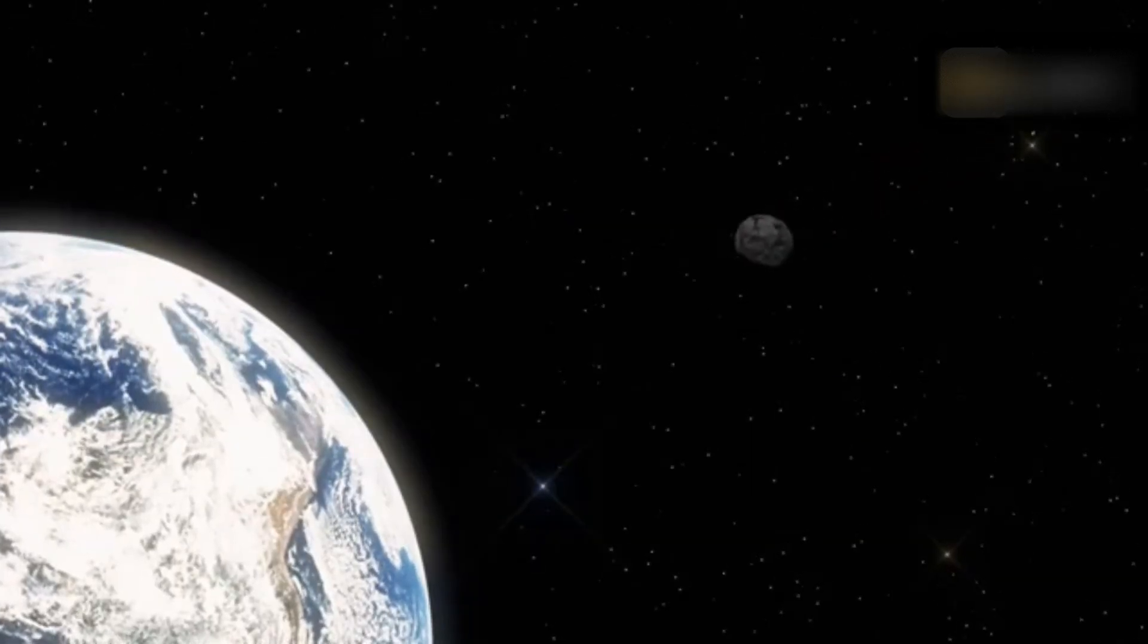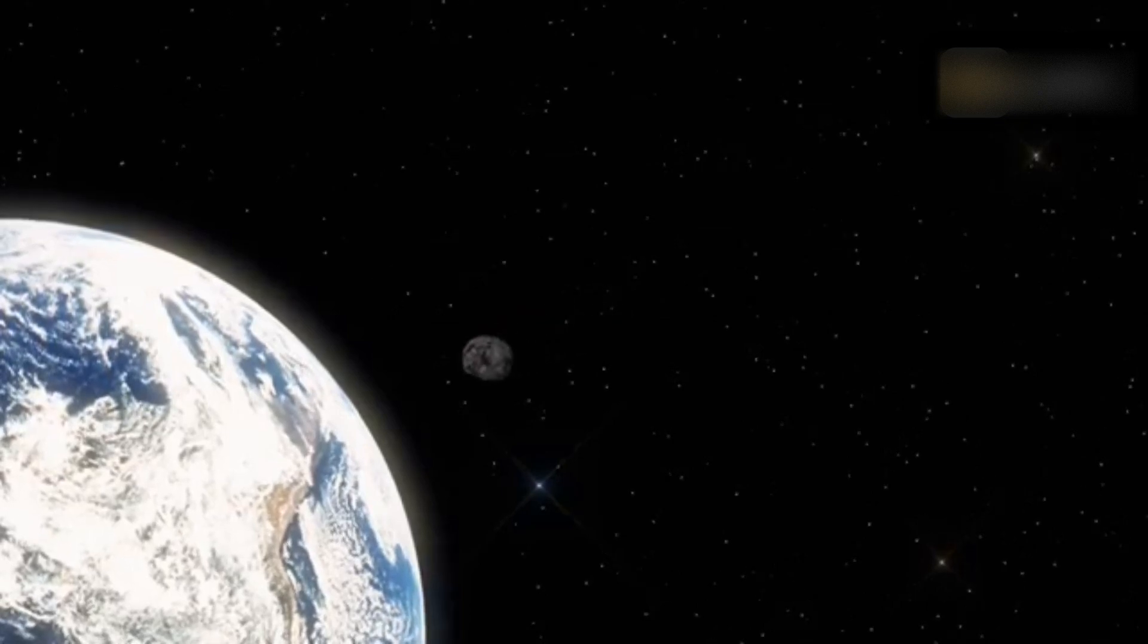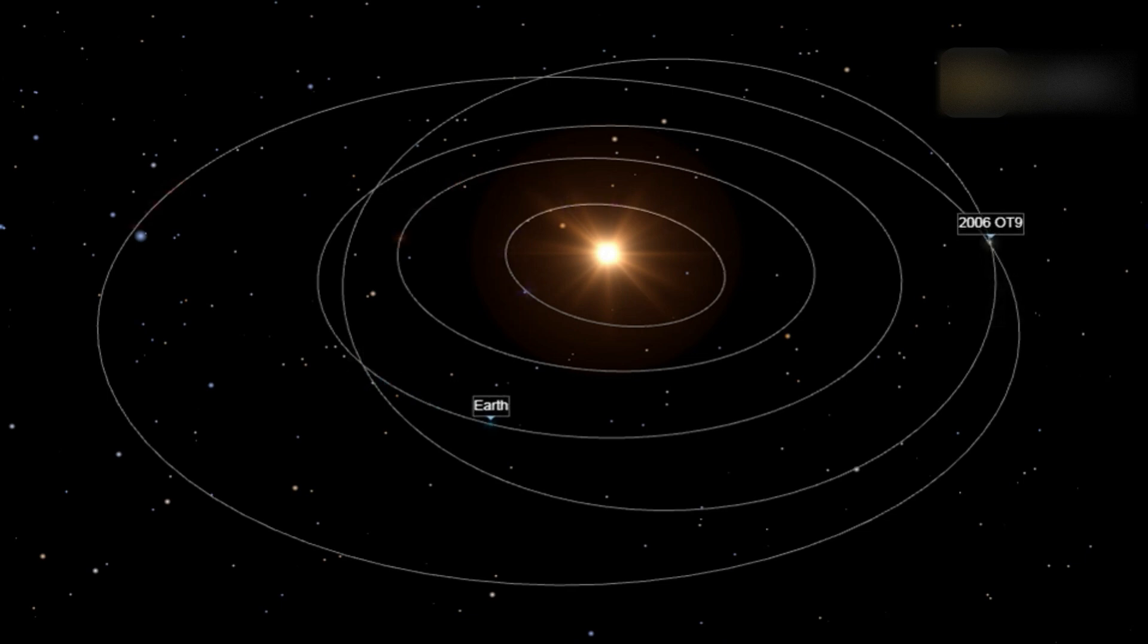2006 OT9 is an asteroid whose orbit intersects with the orbit of the Earth. NASA JPL classified 2006 OT9 as a near-Earth asteroid due to its low Earth orbit.